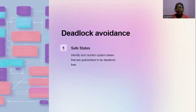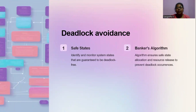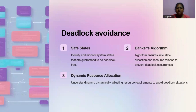Deadlock avoidance. Safe states: identify and monitor system states that are guaranteed to be deadlock-free. Banker's algorithm: an algorithm that ensures safe state allocation and resource release to prevent deadlock occurrences. Dynamic resource allocation: understand and dynamically adjust resource requirements to avoid deadlock situations.